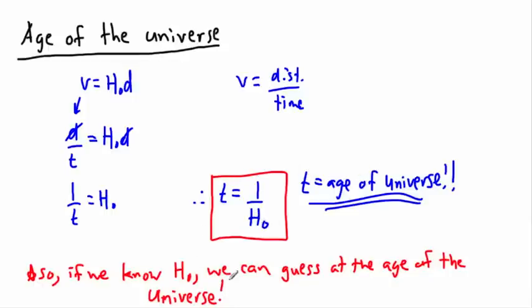We can guess at the age of the universe, and it turns out no matter how you do this, no matter how you approach it, it seems like the age of the universe is around 13.7 billion years old. It doesn't matter what method you use; almost all methods seem to converge to this number.